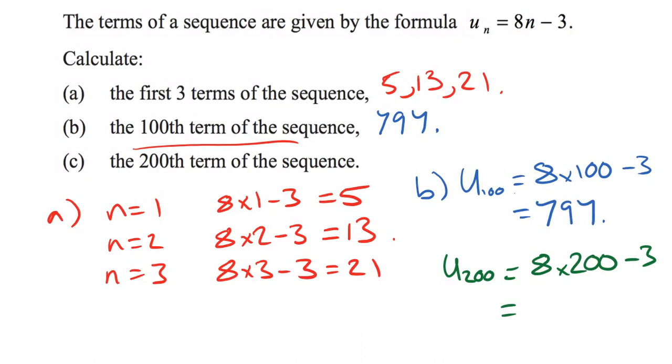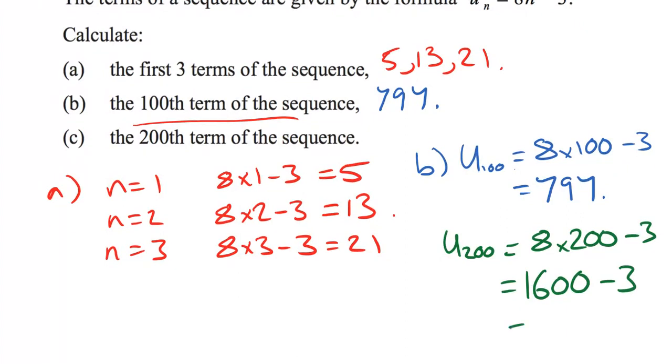Let's do some working here. 8 times 200 is 1,600. So 1,600 minus 3 will be 1,597. 1,597 is our 200th term.